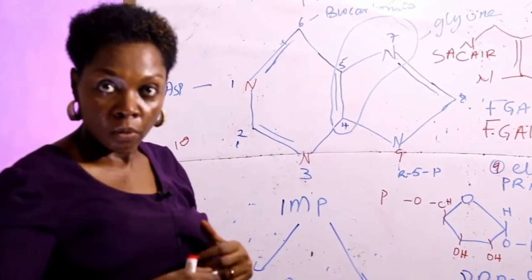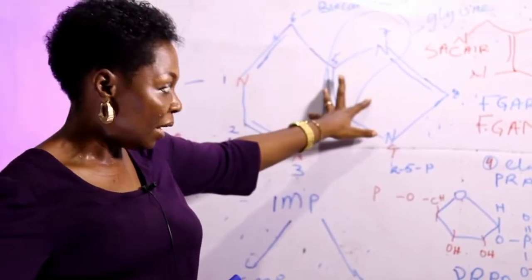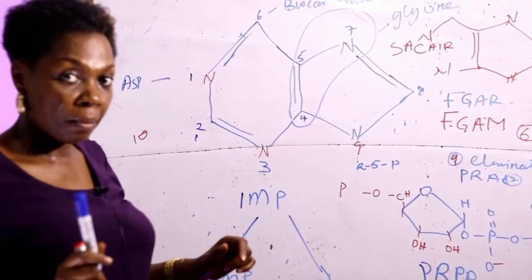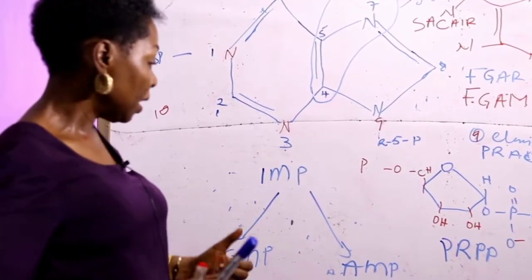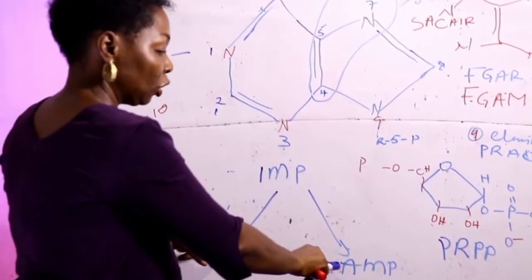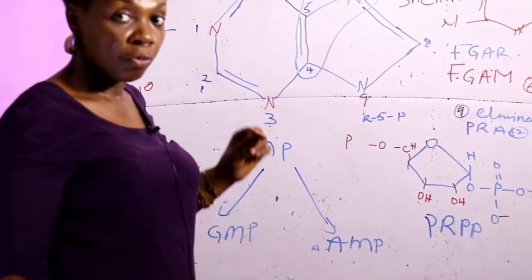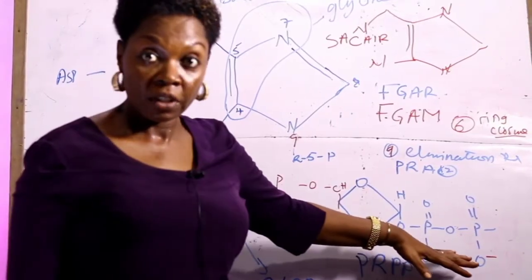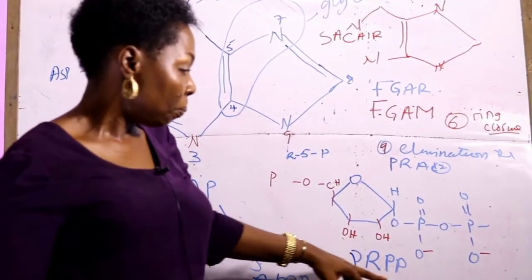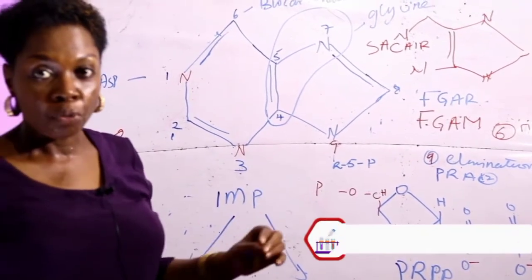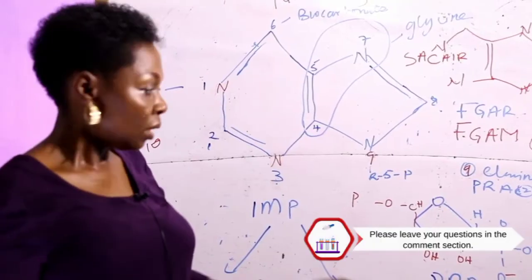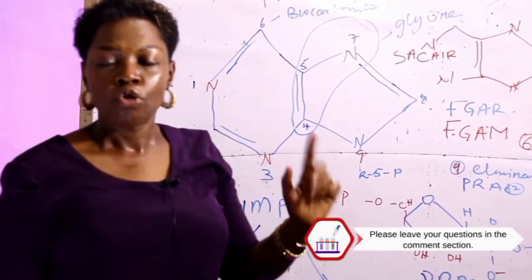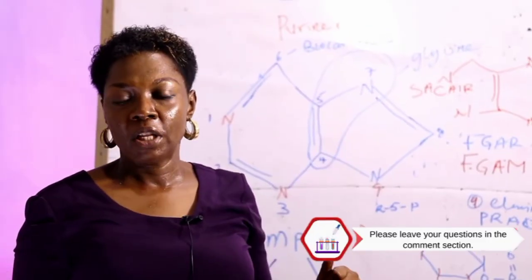For the purine nucleotide biosynthesis, the nucleotide base is formed on the ribose sugar, and the first purine to be formed in the pathway is IMP — inosine monophosphate — from which you have the formation of AMP and GMP. Remember that the first step is the activation of the ribose sugar, which involves the addition of a phosphate group. So note PRPP, inosine monophosphate, and the precursor molecules. Drop your questions in the comment section below and watch out for the next video.